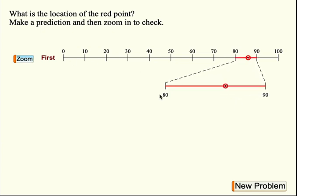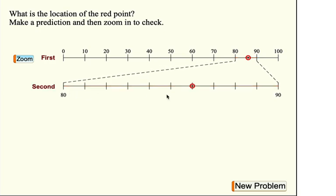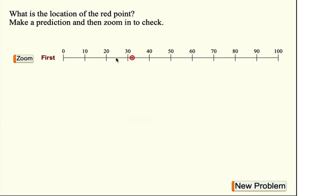So here's our interval, and we can watch it as it grows. And okay, here's that point that we see here. It's at the exact same location. But now that I've zoomed in, I can read its exact location. It's at 86. And I can check that by pressing this button. If I'd like to play again with a new problem and a new location of the point, I can press this button and make a prediction and press zoom.